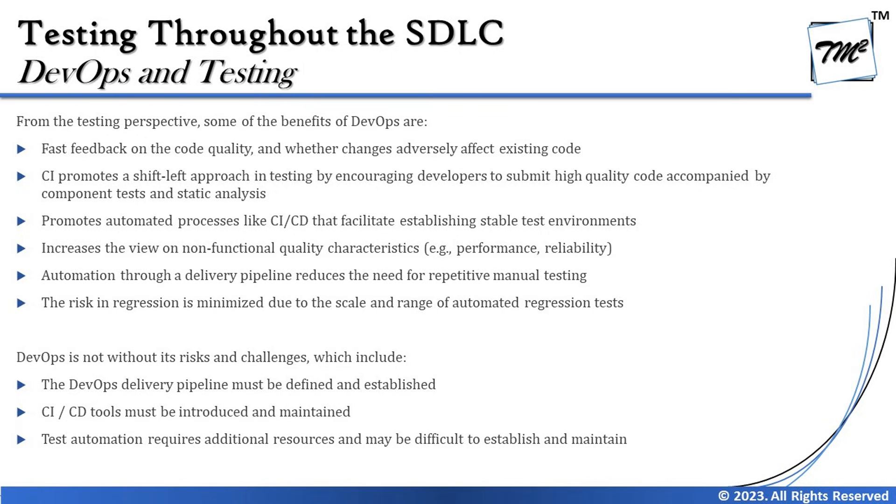Additionally, DevOps promotes automated processes like CI/CD, which facilitates establishing stable test environments. It also increases the view on non-functional code quality characteristics, which are evaluated then and there. We try to prioritize performance, security, and other non-functional tests to early stages like unit testing. If anomalies in the code for a simple program can be identified early, memory leaks can be detected there and then, reducing performance issues. Some quality characteristics like performance and security can be shifted left to an early phase.